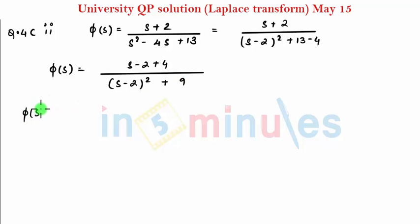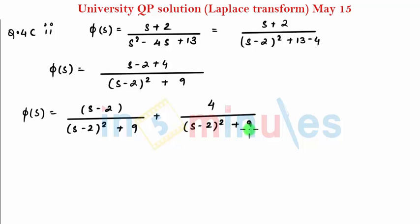So I can write phi of S to be S minus 2 divided by S minus 2 the whole squared plus 9 plus 4 divided by S minus 2 the whole squared plus 9. After taking L inverse, L inverse of phi of S can be written as e raised to 2t, and then S upon S squared plus 9 is cos 3t, and there is a 4 term here, so 4 by 3 sine 3t. That's my answer.